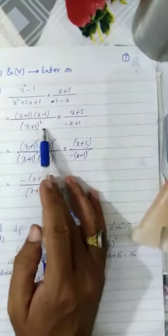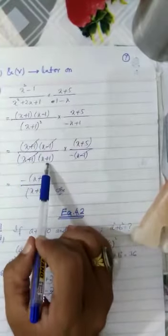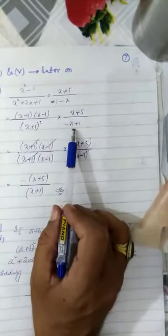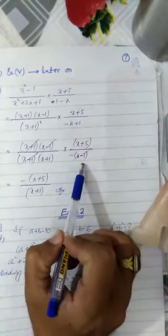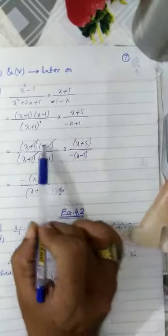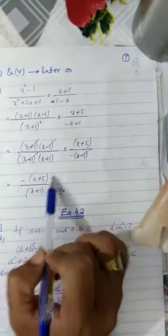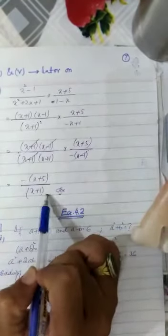(x + 1)² can be written as (x + 1)(x + 1), whereas here from this value we have taken minus common, inside the bracket we have x - 1. So you can cancel out the values which are written in numerator and denominator, and you will get your required simplified form.